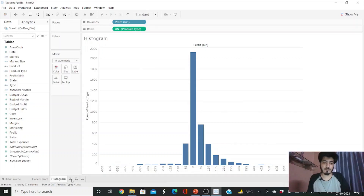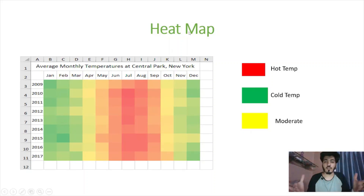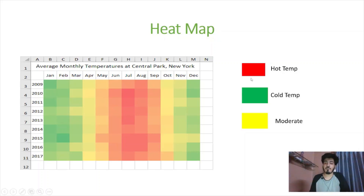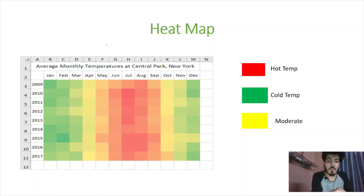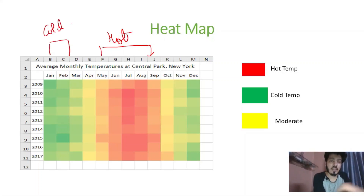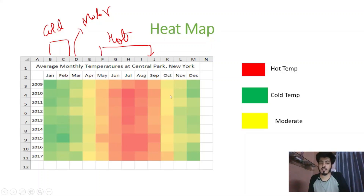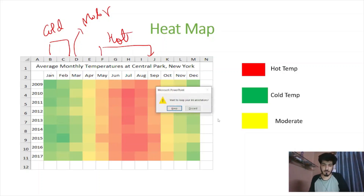Now let's jump to the heat map. A heat map is used when you want to represent a measure as a density using colors. For example, showing temperature for Central Park, New York — red means hot, green means cold, and yellow means moderate. From the chart, we can infer that May to September is hot, January to February is cold, and March is moderate.